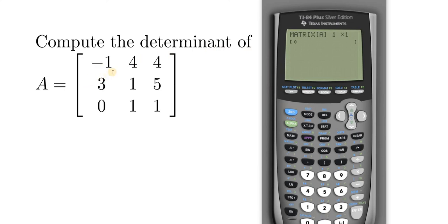Okay, so now we have to enter the dimension of the matrix. The first number is the rows and the second number is the columns. This matrix has three rows and three columns. So three, use the arrow key here, three, and then enter.